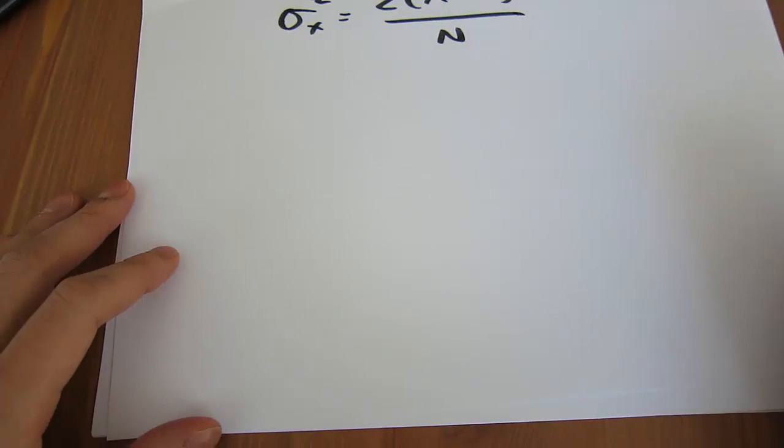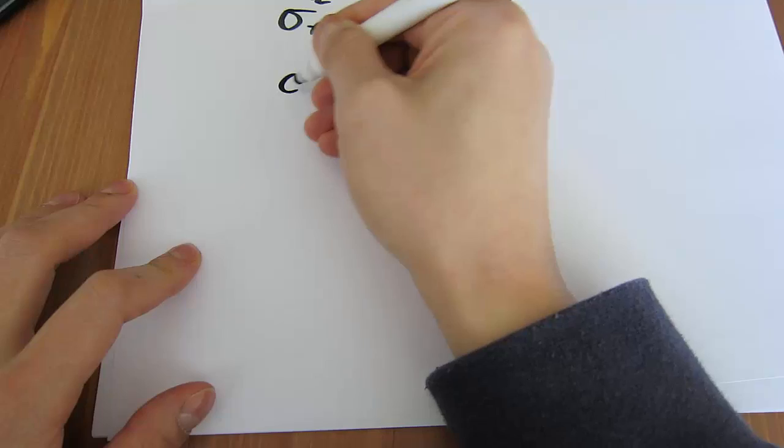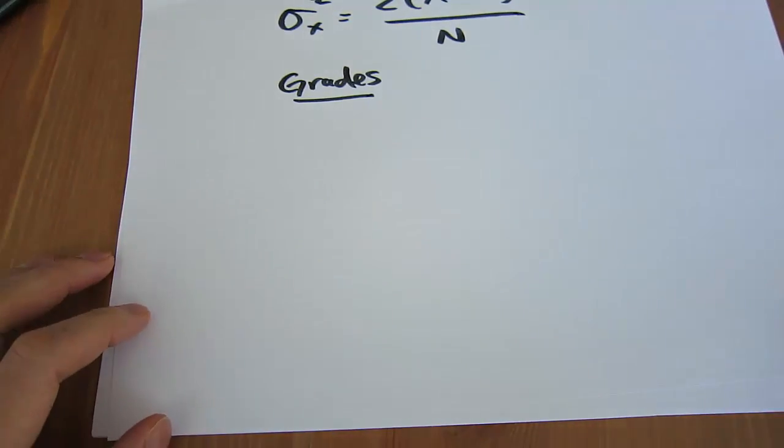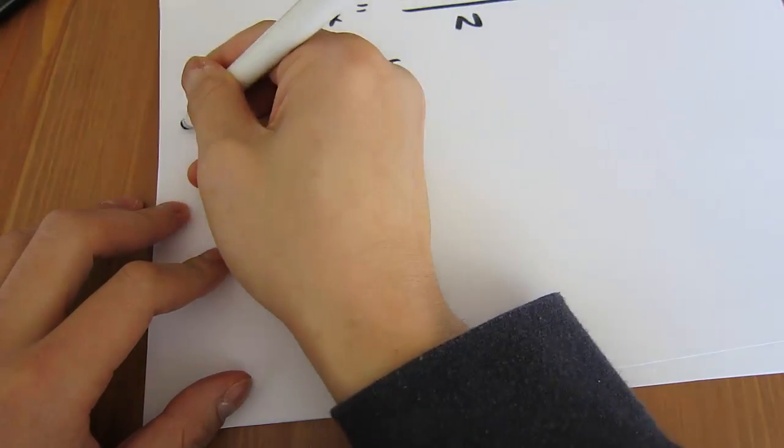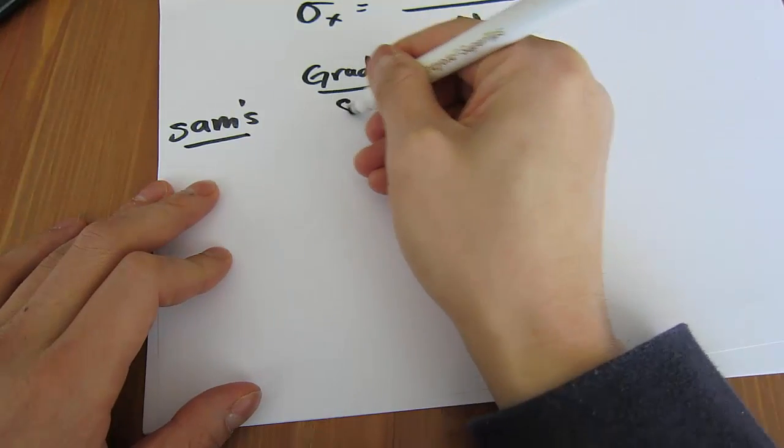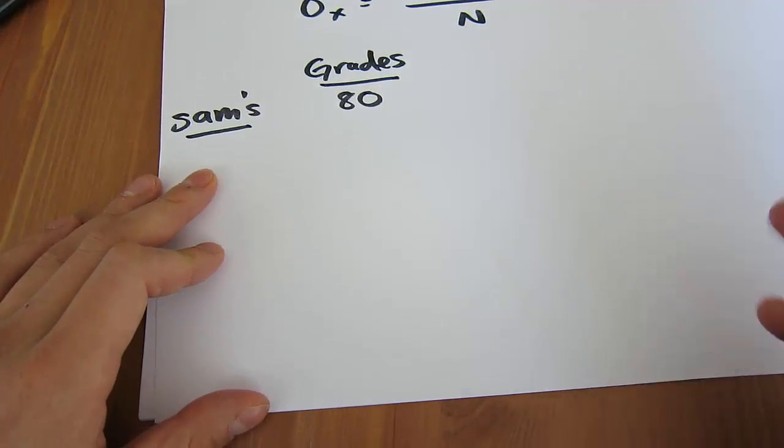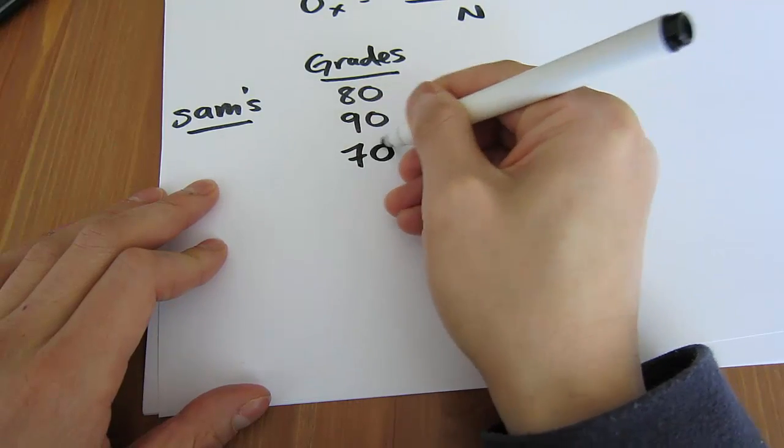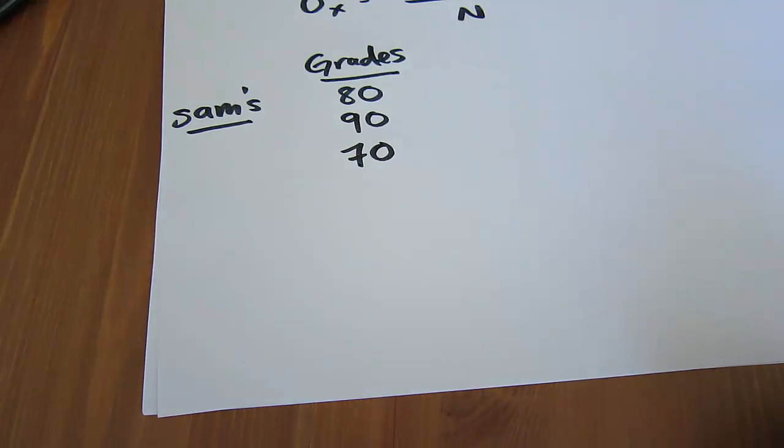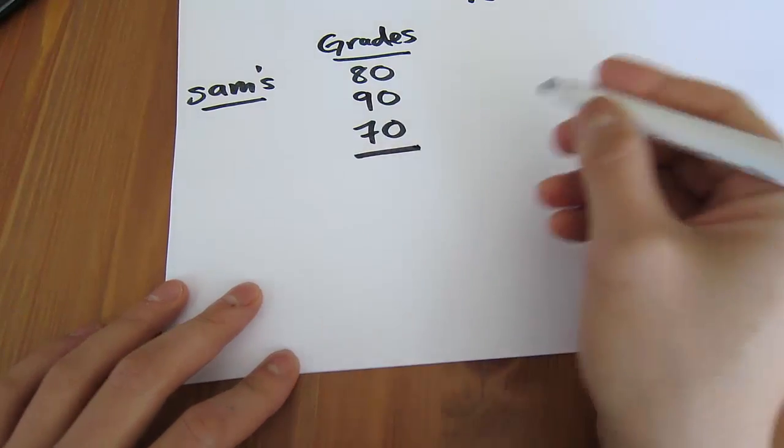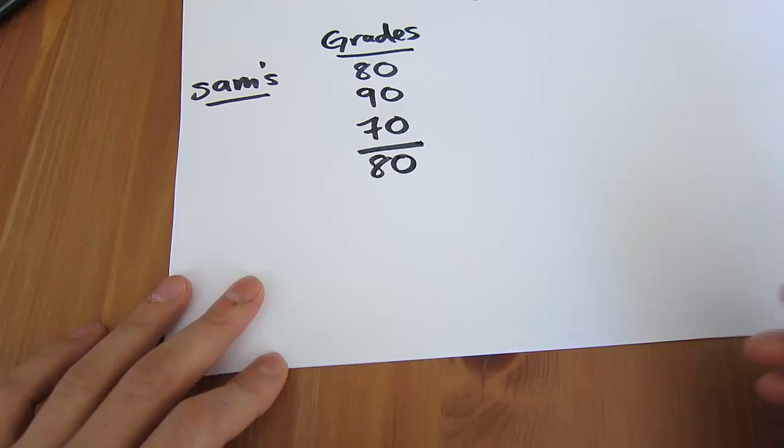So for example, suppose we're looking at some grades. Suppose we have two tutors, and they both record down their students' grades. The first one is Sam's class, and Sam's students scored 80, 90, and 70 in the final exam. And we take the average, and you'll find that Sam's students have an average grade of 80.